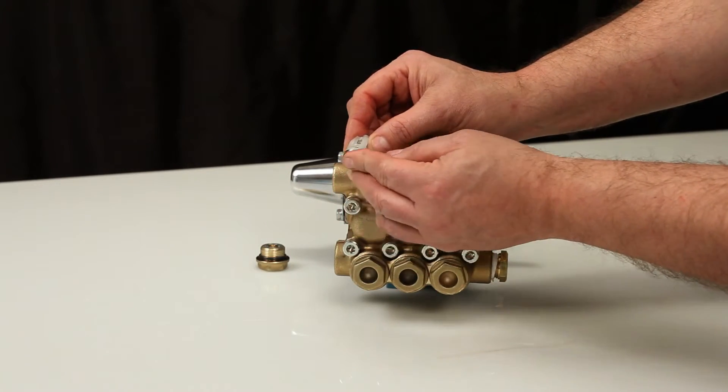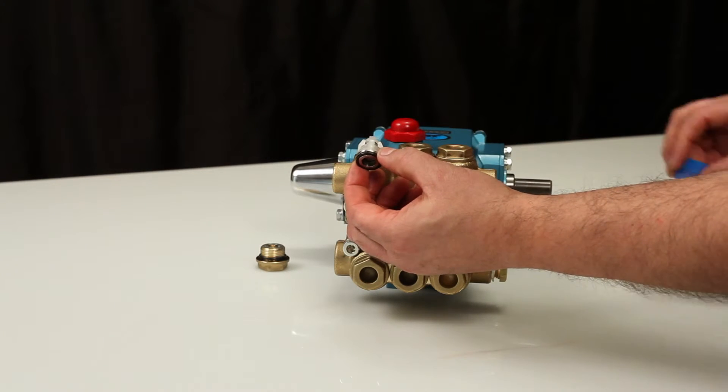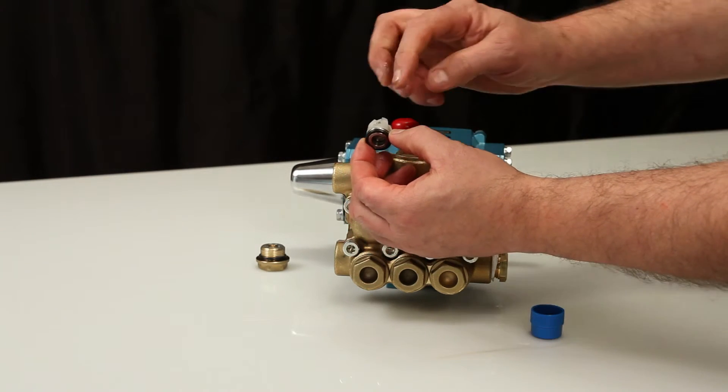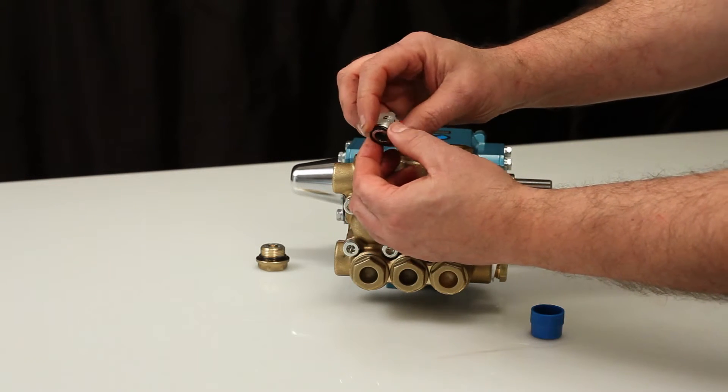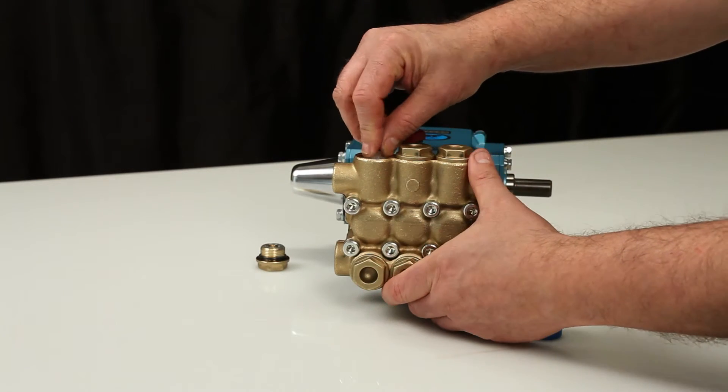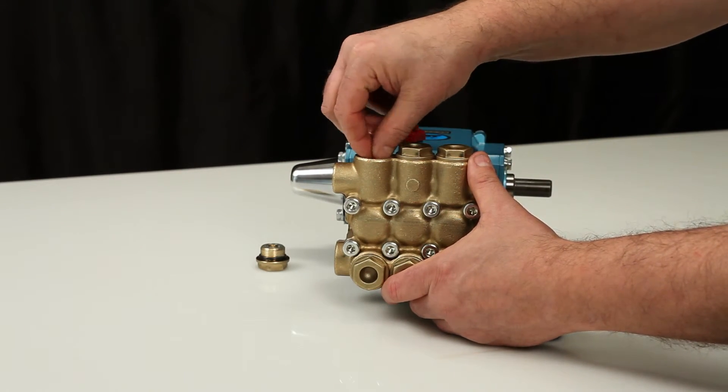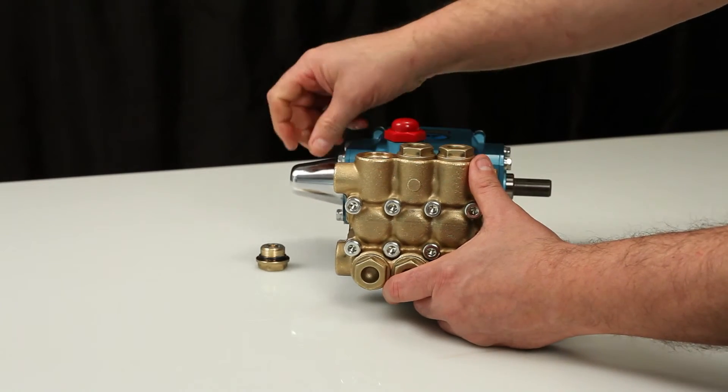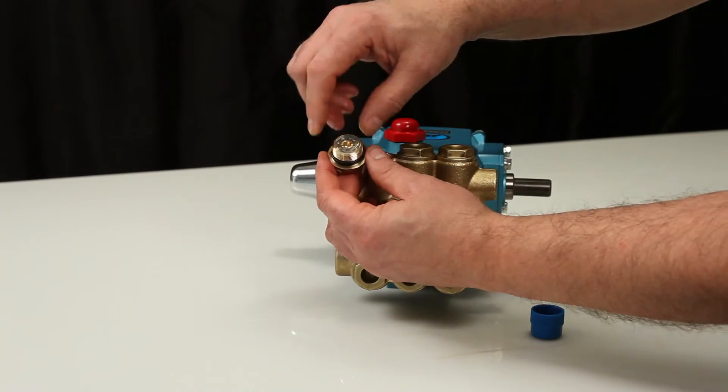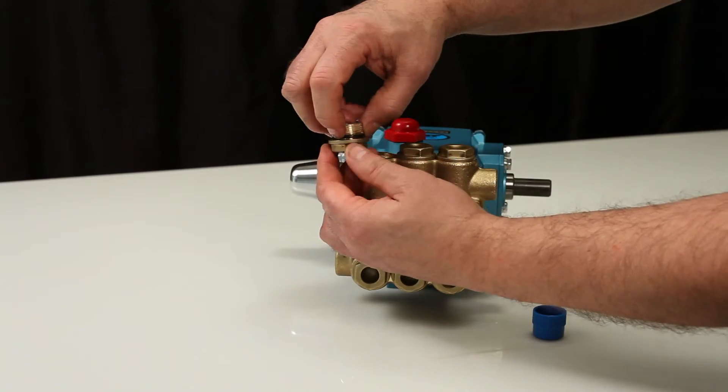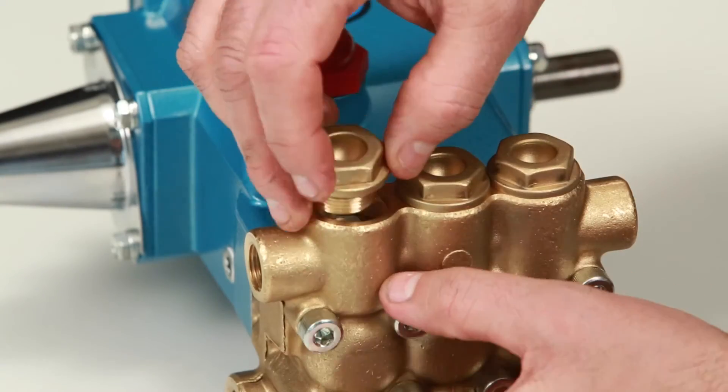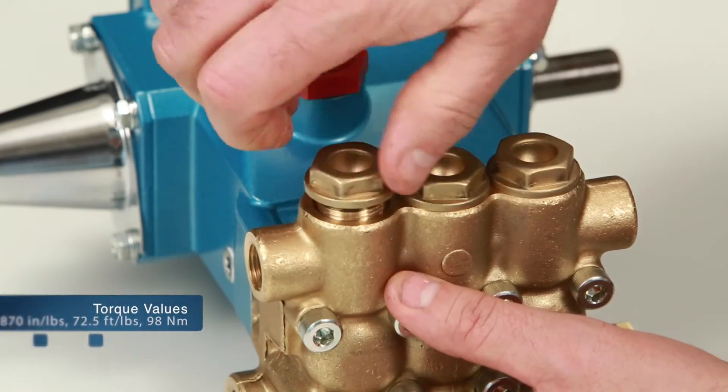Replace the O-ring and lubricate before installing the assembly into the manifold. Next, insert the valve assembly into the manifold and press into place. Lubricate the O-ring and reinstall the valve plug. Torque to specification.